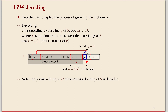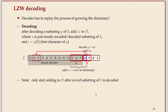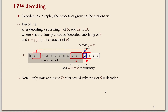Note that this means the decoder is always lagging one step behind in the following sense: we only start adding to the dictionary after we have decoded the second substring of s. We need x and we need y before we can add xc to the dictionary.